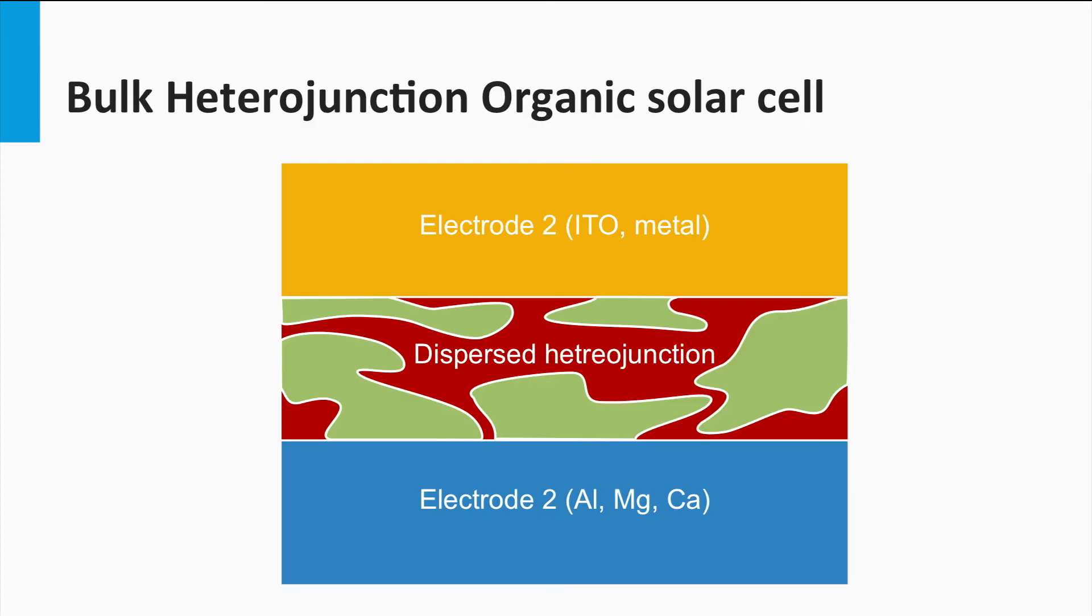Therefore the organic solar cells are based on bulk heterojunction photovoltaic devices. In such device the electron donor and the electron acceptor materials are mixed together. Typical length scales of the mixture of the blend equal to the exciton diffusion length can be achieved. As a result a large fraction of the excitons excited in the material due to light absorption can reach an interface where they are separated into an electron and a hole.